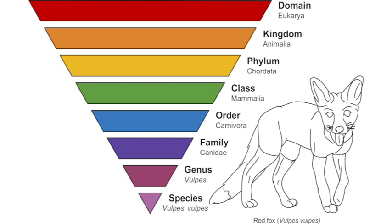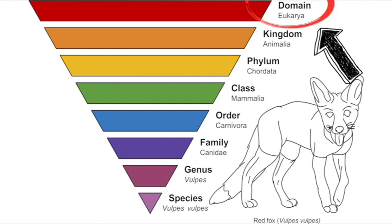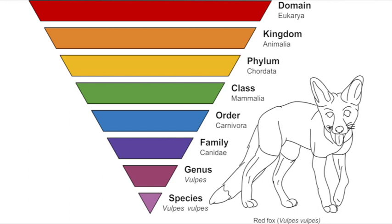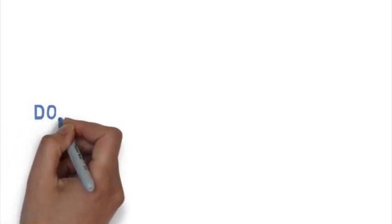Carl Linnaeus revolutionized modern taxonomy and implemented the naming system we use for all different species of biological organisms, and scientists still use essentially the same approach today. The only major addition is the domain taxon group, which sits at the very top of the pyramid in red. At the top of the pyramid you're at a very general level with billions of different species, and as you move down the pyramid things get more specific.